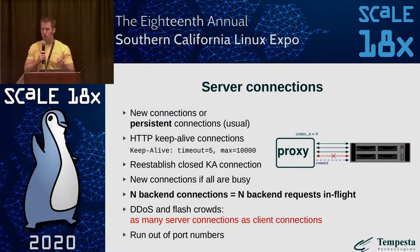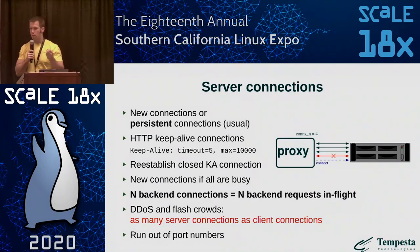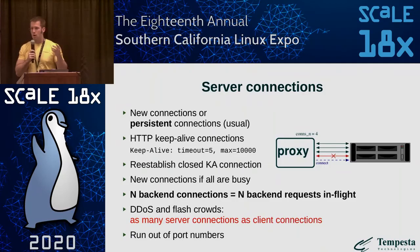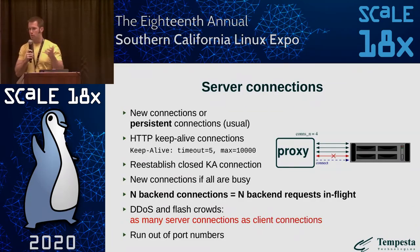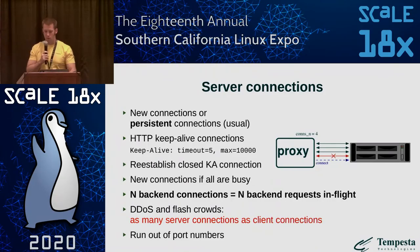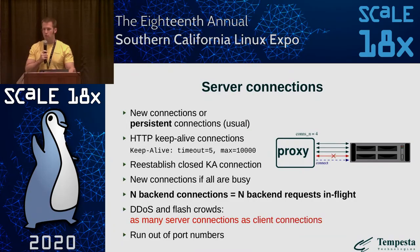However, each connection at each point of time can be used by only one request. It means that as a rule of thumb, if we have 1,000 clients and each of them can currently send a request, then we need around 1,000 connections to our upstream service. This opens a vector for DDoS attacks, and is also not good for usual flash crowds which can be experienced in your web installation.